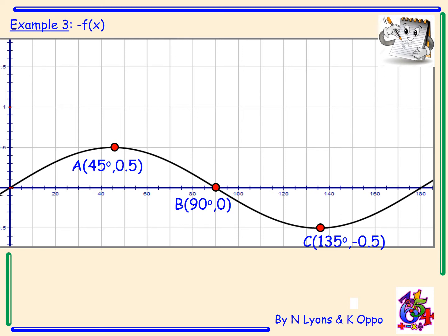Example 3 here we have a sine graph and we have to draw the graph of negative f(x). Again flip this about our x-axis however point B is on the axis and will not change. Once we have reflected in our x-axis we label our new points: A becomes (45°, -0.5) and C becomes (135°, 0.5).